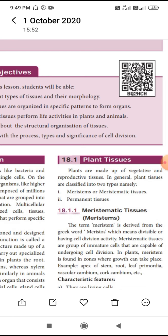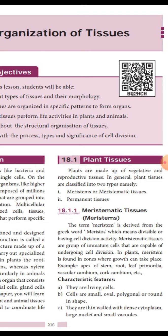What are the characteristics of meristematic tissue? The cells are living in nature. The cell shape is small, oval, polygonal, or even irregular. The cell wall is made up of thin-walled cellulose. There is dense cytoplasm and a large nucleus, but vacuoles are small.